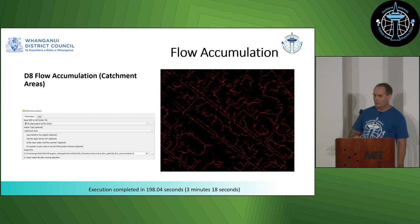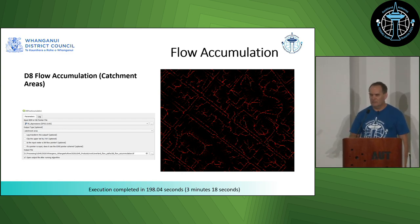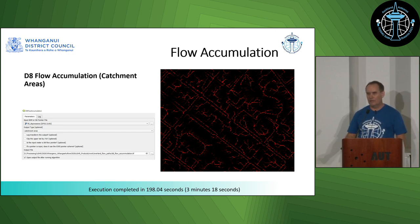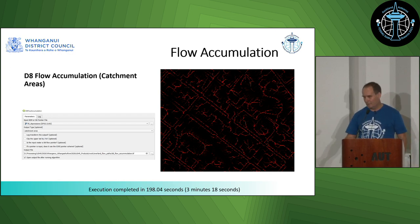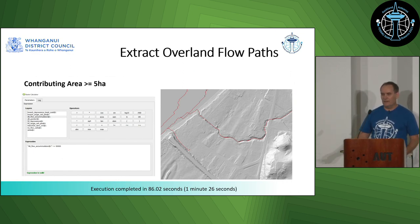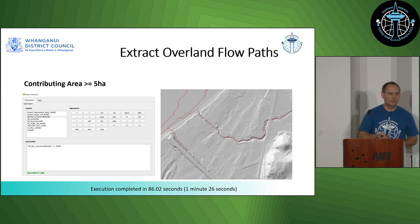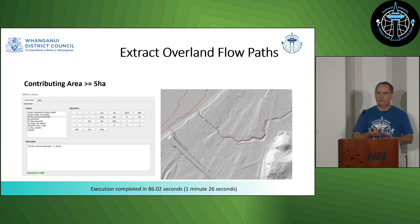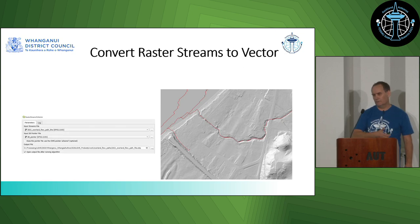The next thing we wanted to calculate was flow accumulation — essentially calculating all flow paths across the surface and working out how much area is draining into those particular paths. We extract them based on three criteria: flow paths with a contributing area over five hectares, between one and five hectares, and anything below one hectare. Then we convert the streams to vector using some lovely tools for that.